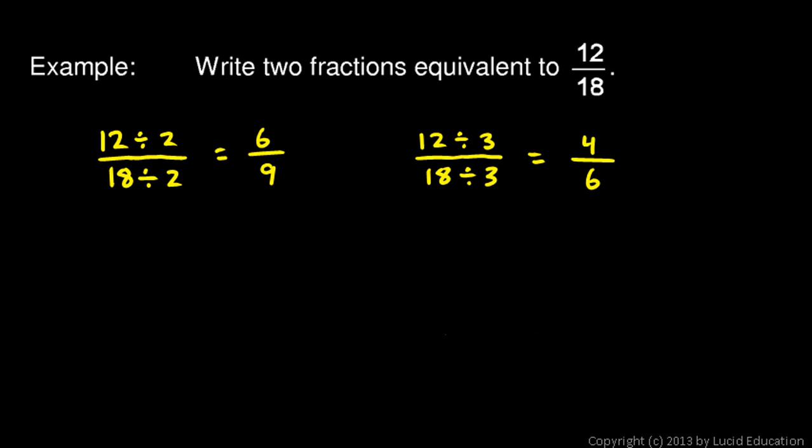Now, as we're working this, you might have thought there's actually an even better approach. Look at this: you could have said 12 over 18 and divided the top and the bottom by 6. Watch this: 12 divided by 6 is 2, and 18 divided by 6 is 3. So 2/3. I found, actually, instead of finding two fractions equivalent, I've now found 3.